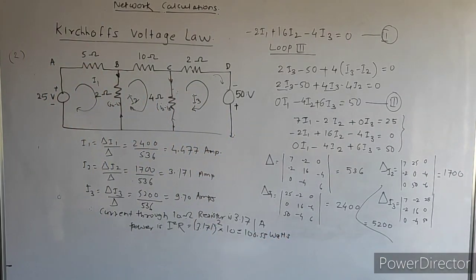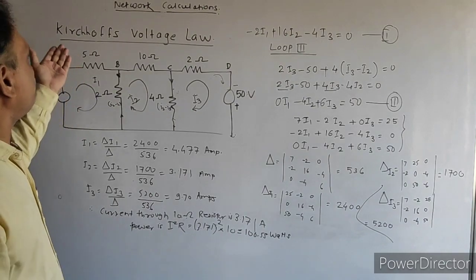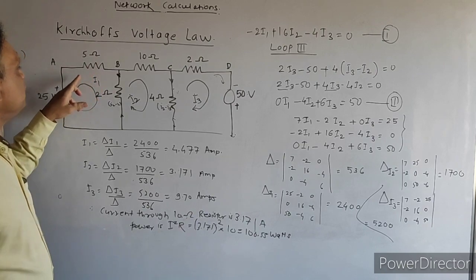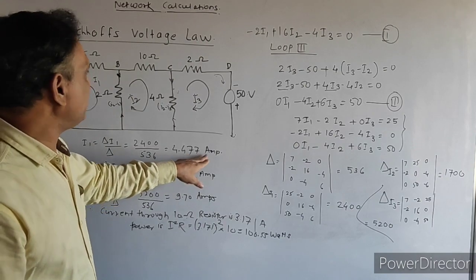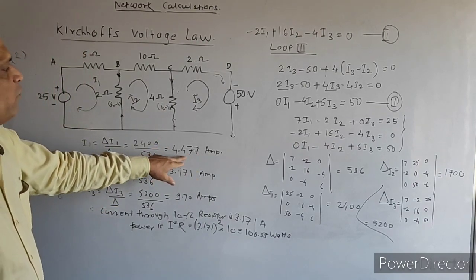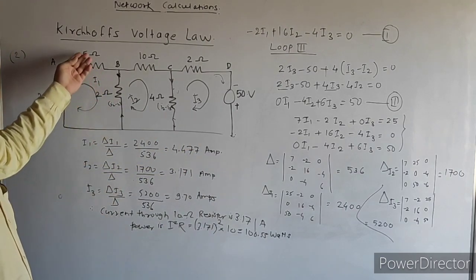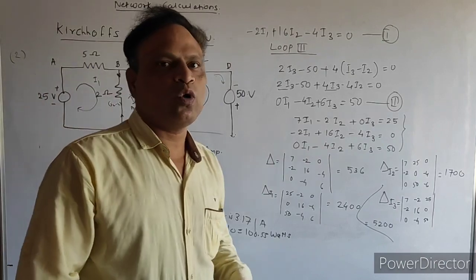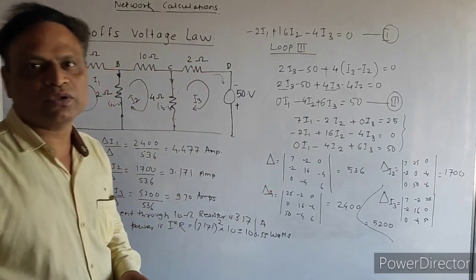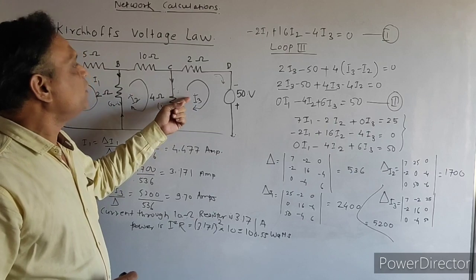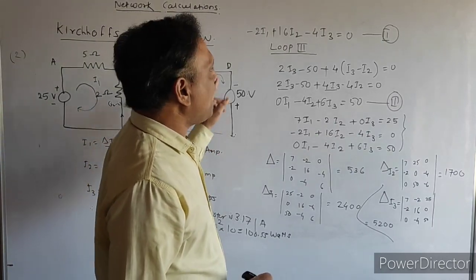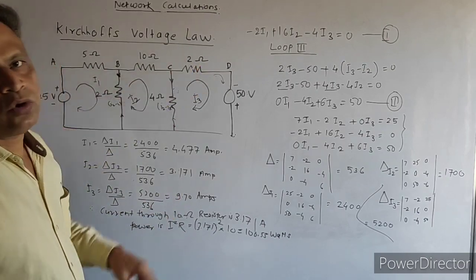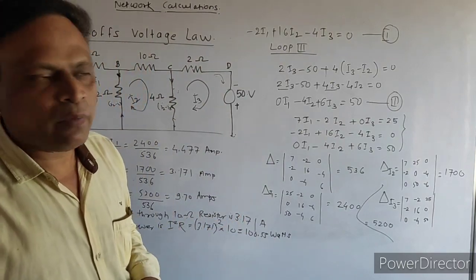They may also ask for the current through the 5 ohm resistor: that is I1 equals 4.477 amperes, and power equals 4.477 squared into 5. For the 2 ohm resistor, the current is I3 equals 9.7 amperes, so power equals 9.7 squared into 2. In this way we can find current and power across any resistor.